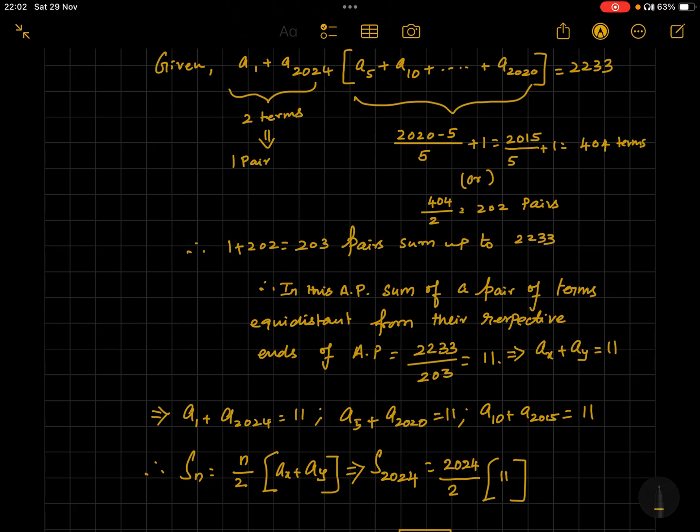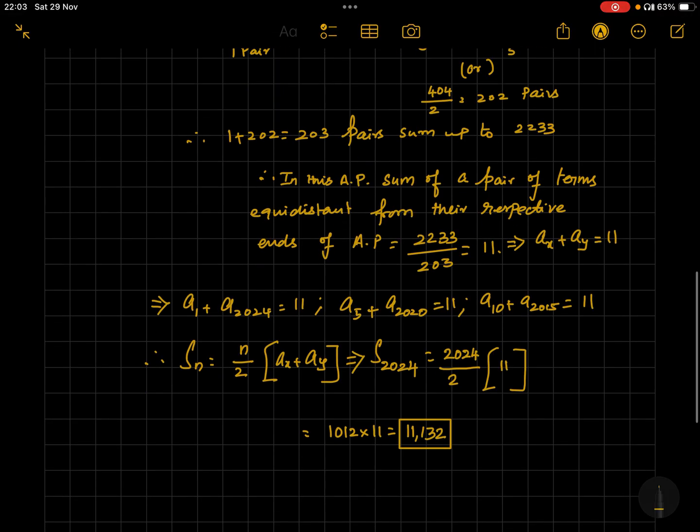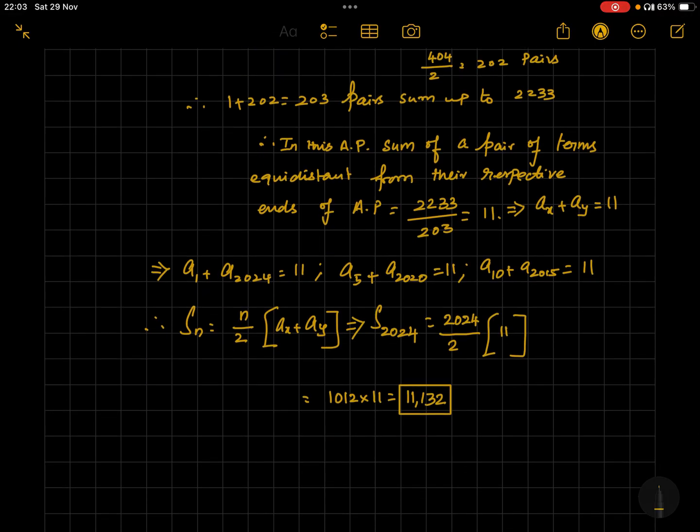Therefore we can use the formula now for finding the sum of first 2024 terms, which is equal to n by 2 into ax plus ay. We know ax plus ay is equal to 11, n is 2024. Therefore the required answer is 2024 by 2 into 11, which is equal to 1012 into 11, which is equal to 11132.